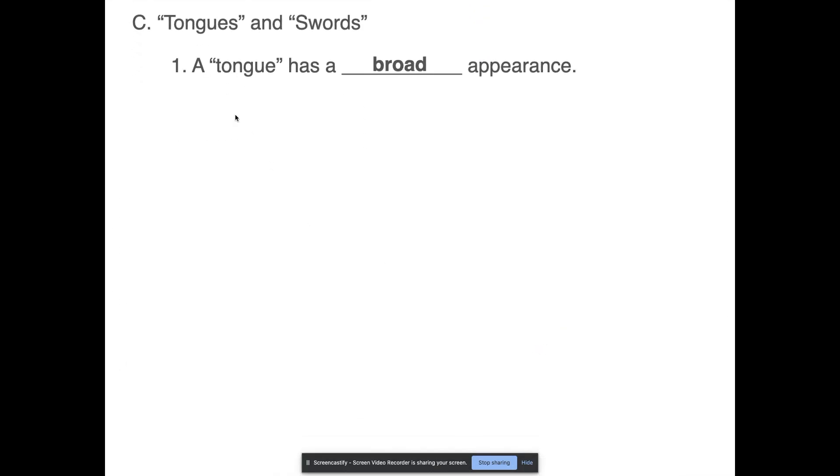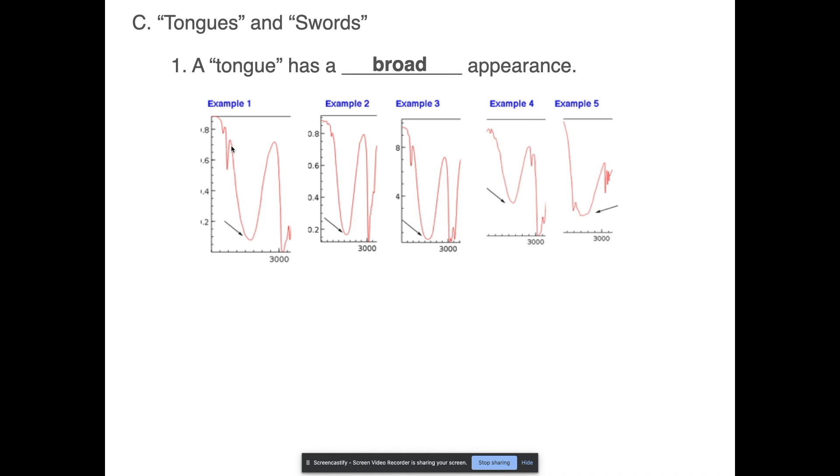So tongues and swords, what exactly are we talking about when we use the term tongues and swords? A tongue is a broad appearance of that little peak. When we say a broad appearance, we're talking about the fact that instead of being this very sharp little jab, you end up with a very long and elongated shape instead. It looks more like a parabola than anything else. These would be examples of tongues. Now they are the telltale sign that you have a hydroxyl group, so that you have an alcohol somewhere in your structure. Almost anytime you see this broad shape, what you're going to be thinking is that means there has to be an OH somewhere on my molecule.